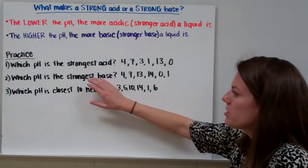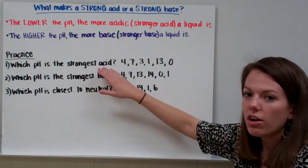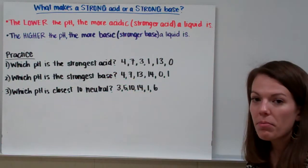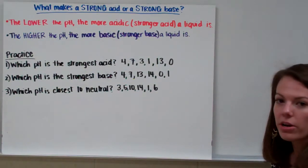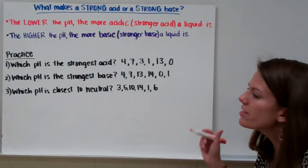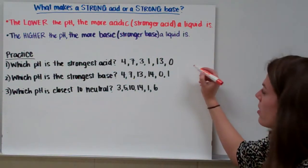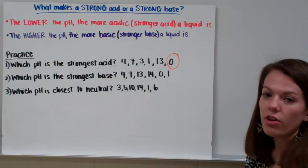So let's do some practice questions. Number one says, which pH is the strongest acid? Okay, remember, the closer you get to 0, the stronger the acid it is. So which number is closest to 0, or which number is 0? Okay, we actually have 0 here, so 0 is going to be our strongest acid.